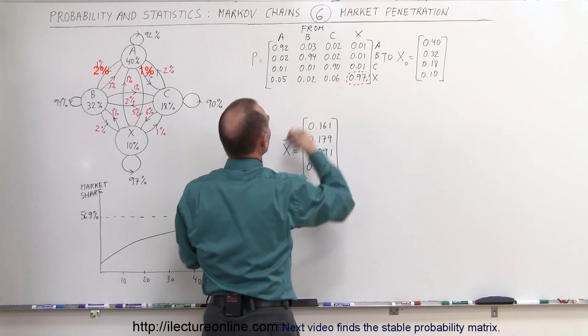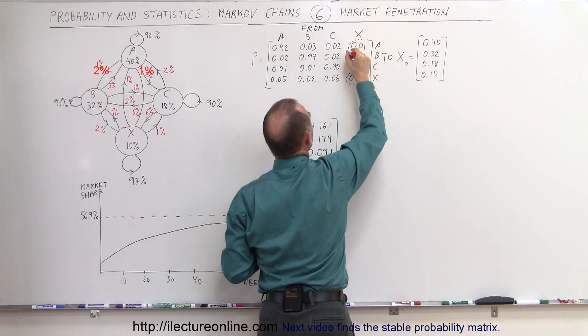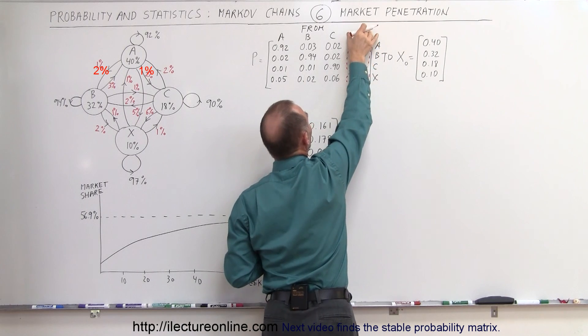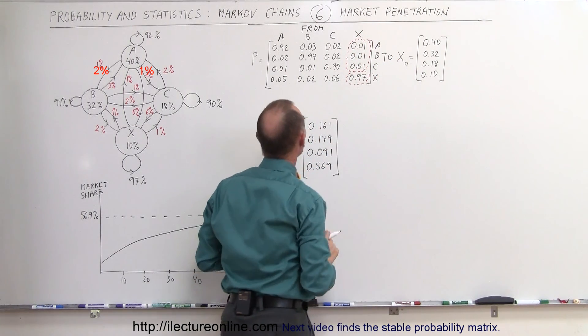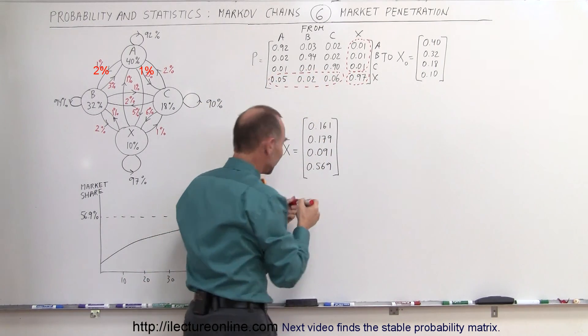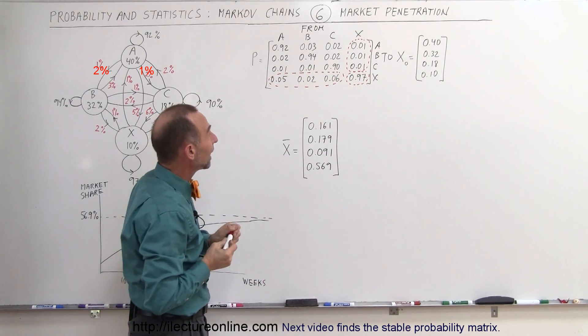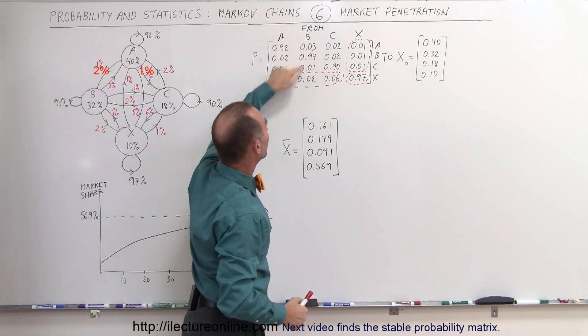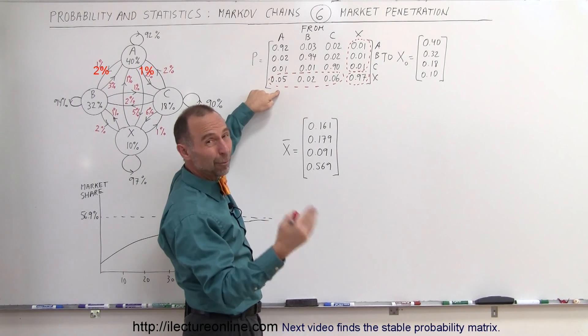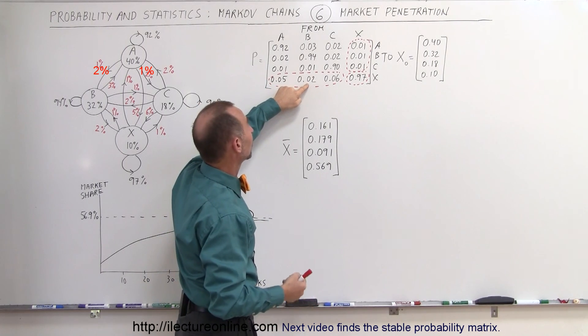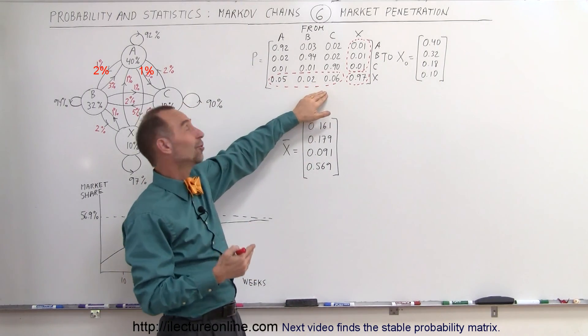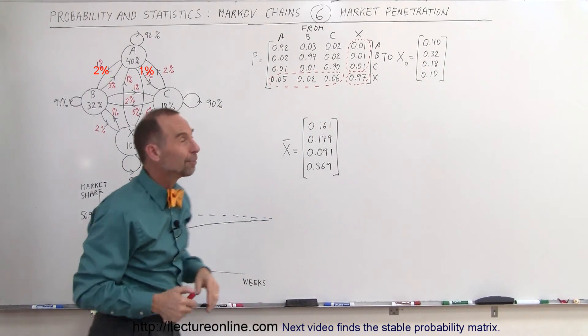This is the indication right here of how many people will move away from brand X to A, B, and C. So this is from X to A, B, and C. Now if you look at this row right here, this tells us how many people will come from other brands to go to brand X. So from A to brand X, from B to brand X, and from C to brand X. You see that 5% of customers will come from brand A, 2% from brand B, and 6% of customers that buy brand C will jump ship and start buying brand X.